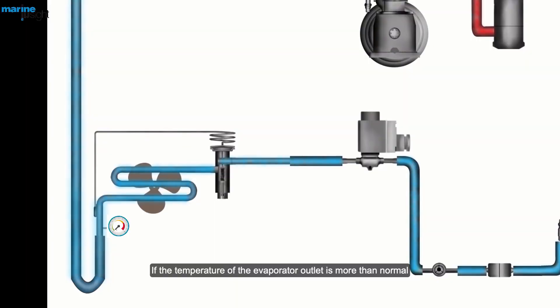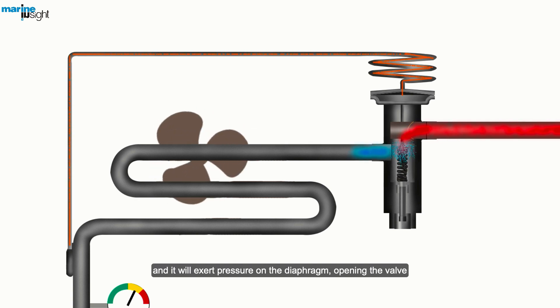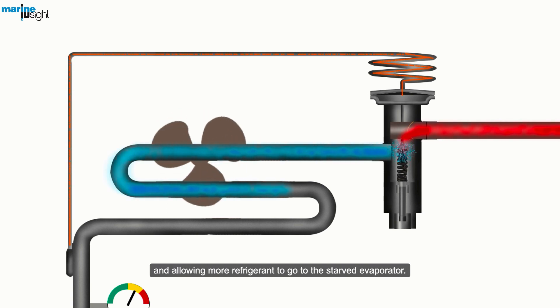If the temperature of the evaporator outlet is more than normal, it indicates that the refrigerant is superheated due to lack of refrigerant. The liquid in the bulb is temperature sensitive and it will exert pressure on the diaphragm, opening the valve and allowing more refrigerant to go to the starved evaporator.